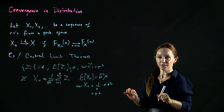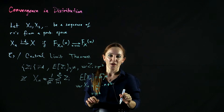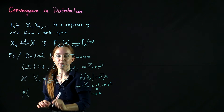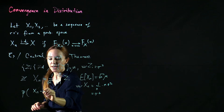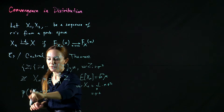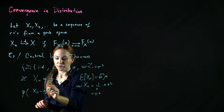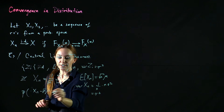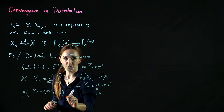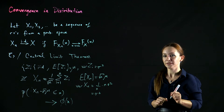Under this particular scaling, the new random variable we produced converges in distribution to a Gaussian. Formally, the probability that xn minus n times mu is less than or equal to x converges to phi of x, where phi of x is the CDF of a standard Gaussian.